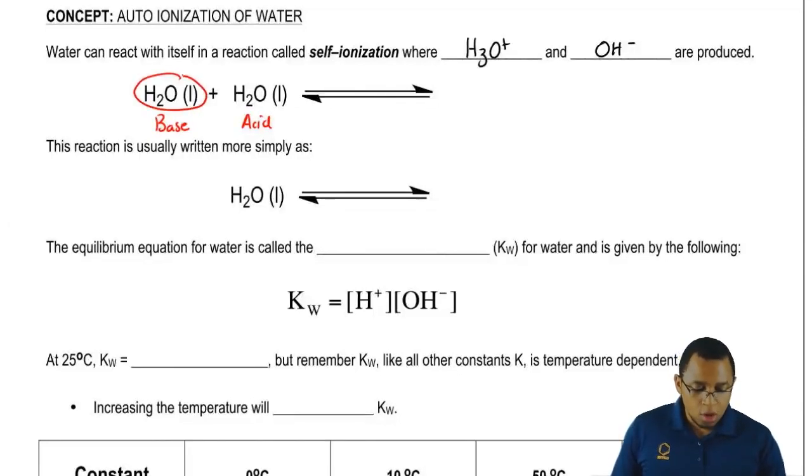This base right here is going to accept an H plus and as a result, it's going to become H3O plus. Then the other water molecule, the one that's acting as an acid, because it's giving away an H plus, it becomes OH minus.